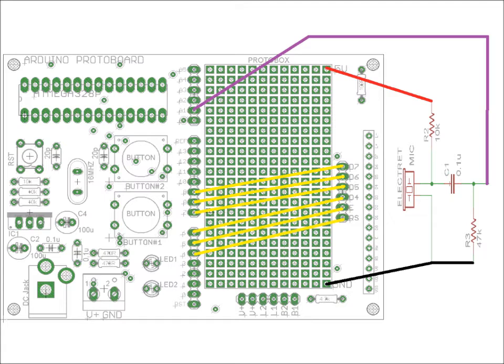We've got pins 4 connected to RS, 5 to E, 6 to D4, 7 to D5, 8 to D6, and 9 to D7 on our LCD connector.